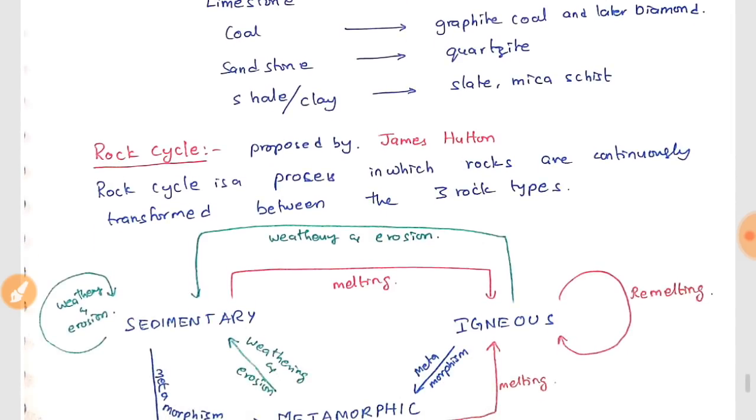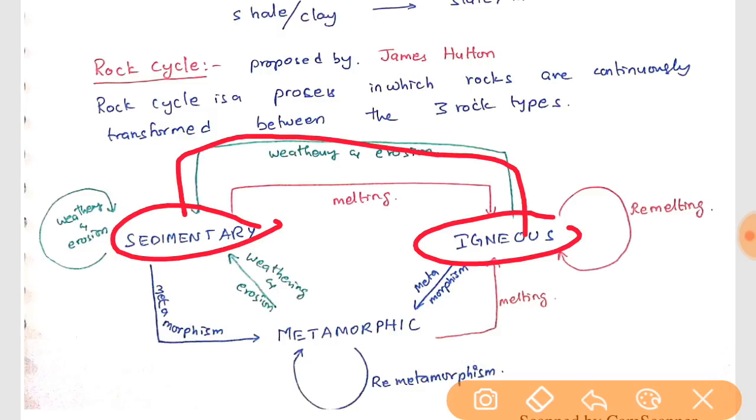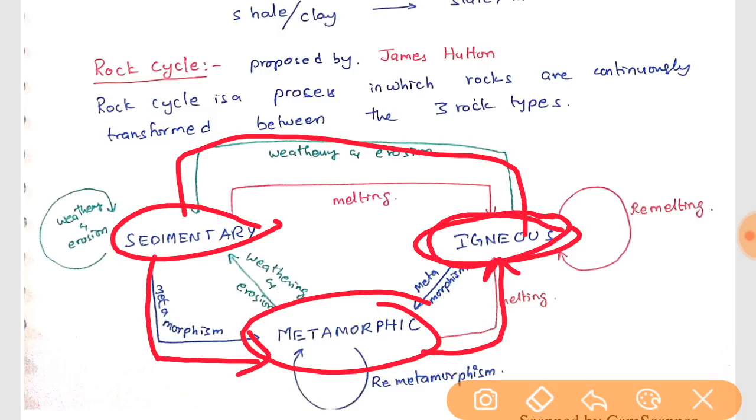We can say it is a cycle. This rock cycle. One man called James Hutton has discovered or proposed this rock cycle. Rock cycle is a process in which rocks are continuously transformed between these three rock types. First comes the igneous rocks. From igneous rocks, after weathering or erosion, it becomes sedimentary rocks. After metamorphism, it becomes metamorphic rocks. If this metamorphic rock comes to the asthenosphere and due to the heat if it melts, then it is called igneous rock again.